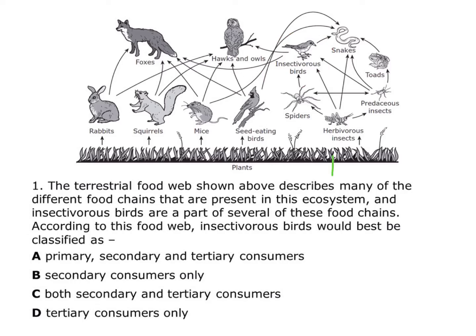So in this food web, the plants across the bottom are my producers. Going up to herbivorous insects — those are my primary consumers. Then I can go over to the spiders, which would be secondary, and up to the insectivorous birds, which would be tertiary. But notice there's also an arrow pointing directly from the herbivorous insects to the insectivorous birds. Since they eat a primary consumer, that also makes them secondary consumers.